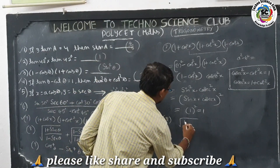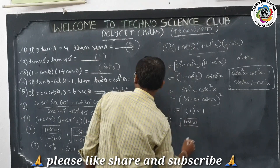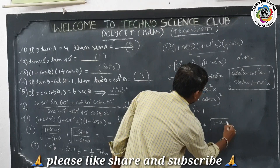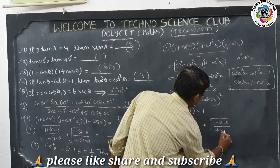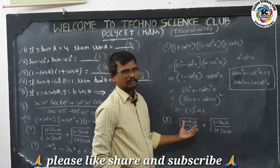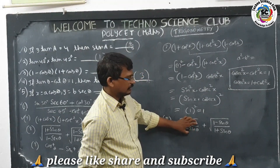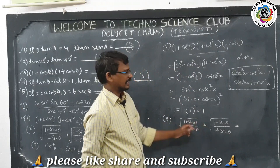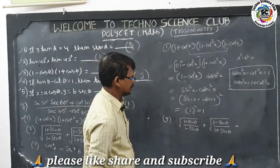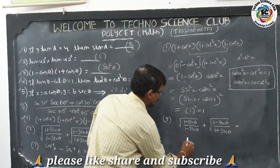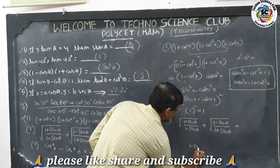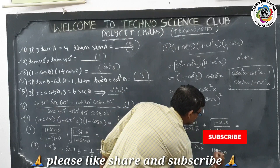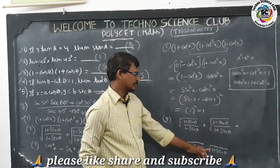The eighth question: square root of (1 + sinθ)/(1 - sinθ) plus square root of (1 - sinθ)/(1 + sinθ). We take the LCM; the common denominator has both (1 + sinθ) and (1 - sinθ). We multiply the numerator and denominator by the respective square root terms.